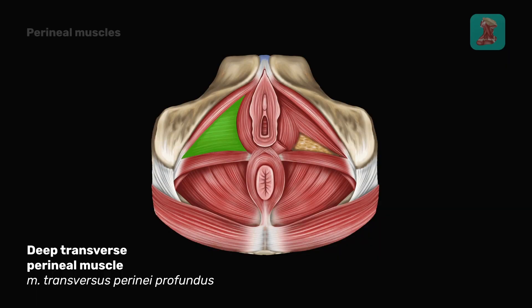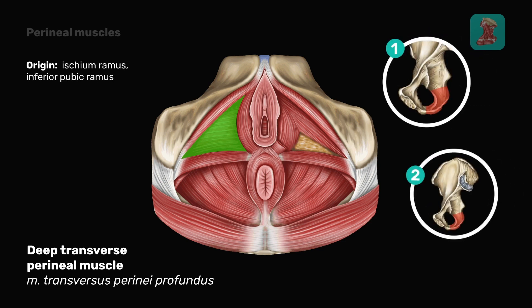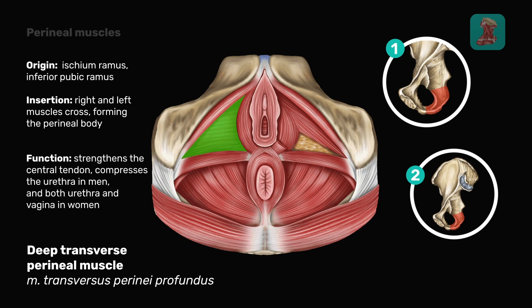The deep transverse perineal muscle originates from the ramus of the ischium and inferior pubic ramus. The right and left muscles cross, forming the perineal body. Its function is to strengthen the central tendon and compress the urethra in men, and both the urethra and vagina in women.